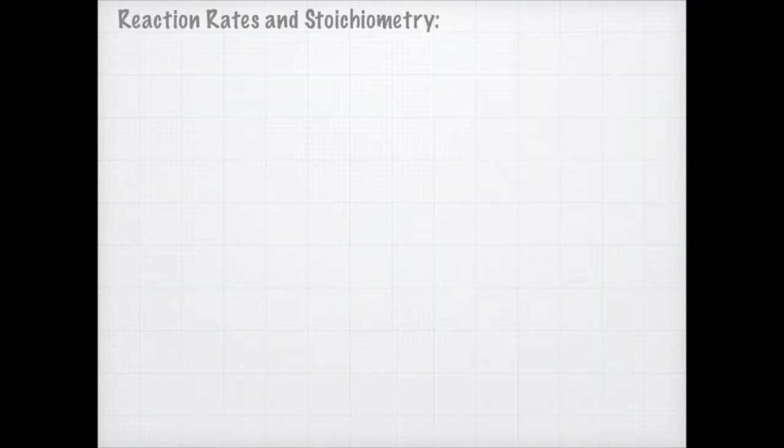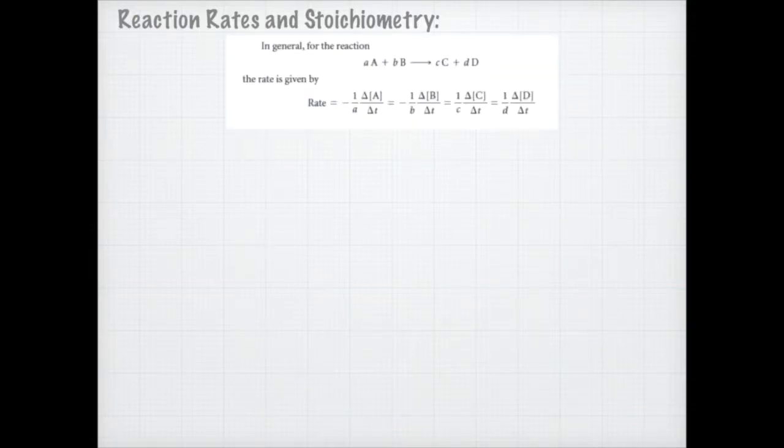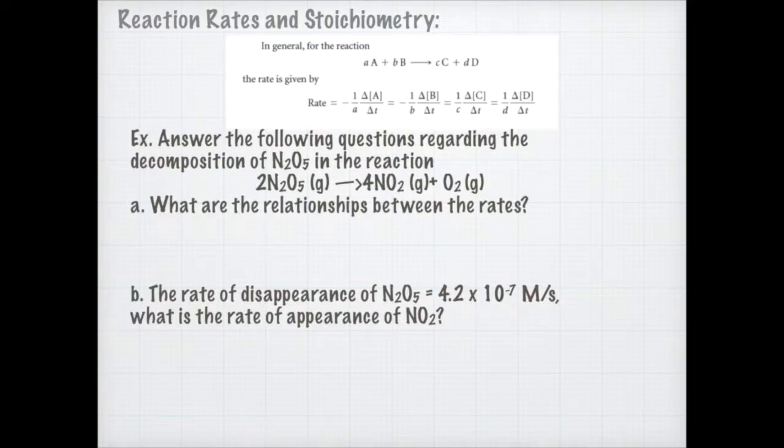Let's look at reaction rates and how we can use our stoichiometry in order to determine reaction rates. In this reaction here, the rate of disappearance of A is going to be negative 1 over A, the little a being its coefficient, times its rate equals negative 1 over B times the rate of B equals 1 over C times the rate of C, which equals 1 over D times the rate of D. This is how we use stoichiometry to determine the rate.